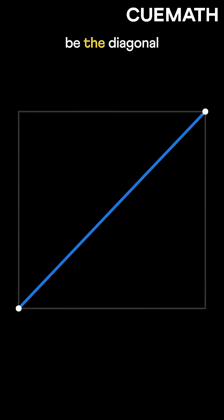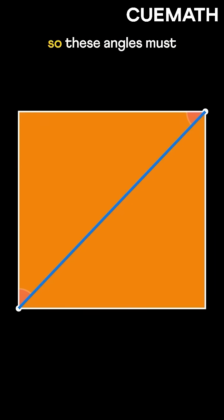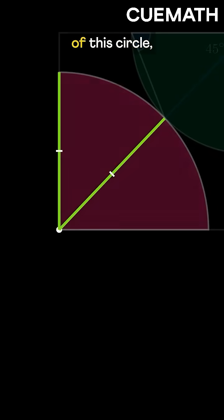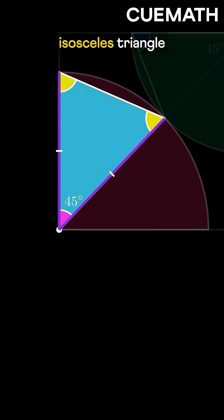This line must be the diagonal of the square, so these angles must be 45 degrees. Now, in this triangle, these two sides are equal, as they are the radii of this circle, making it an isosceles triangle with two equal angles.